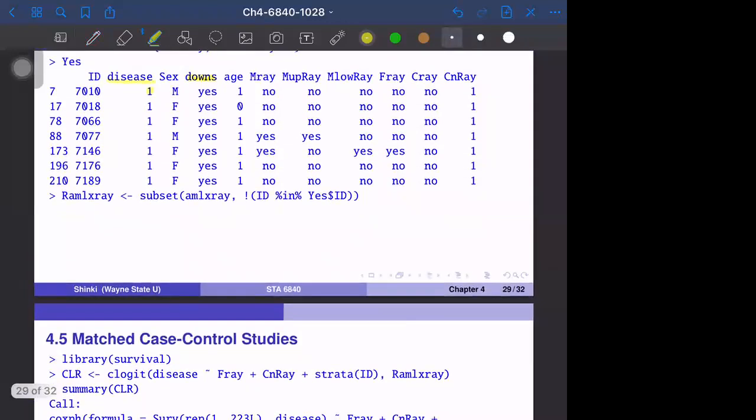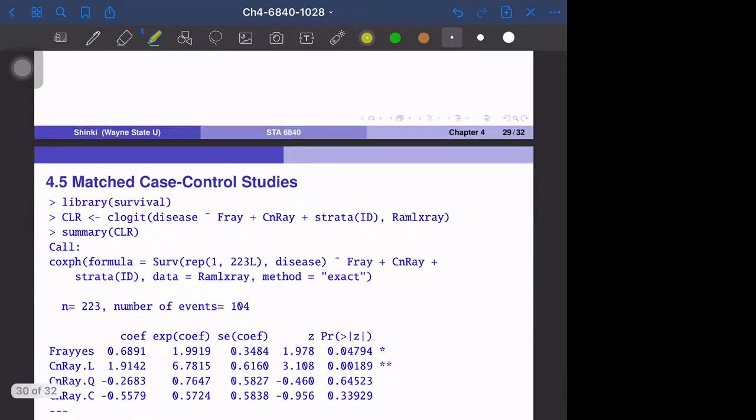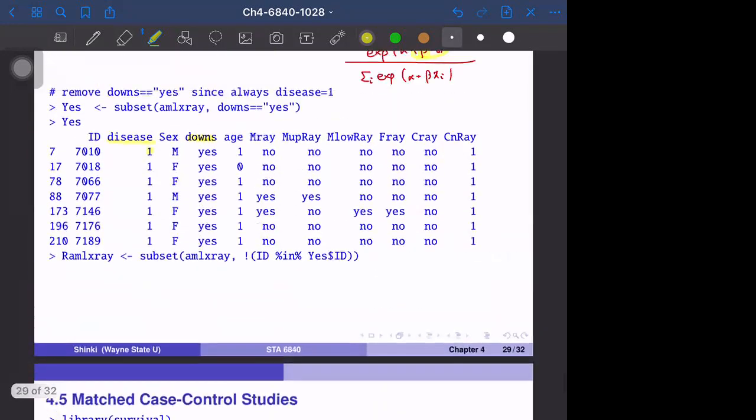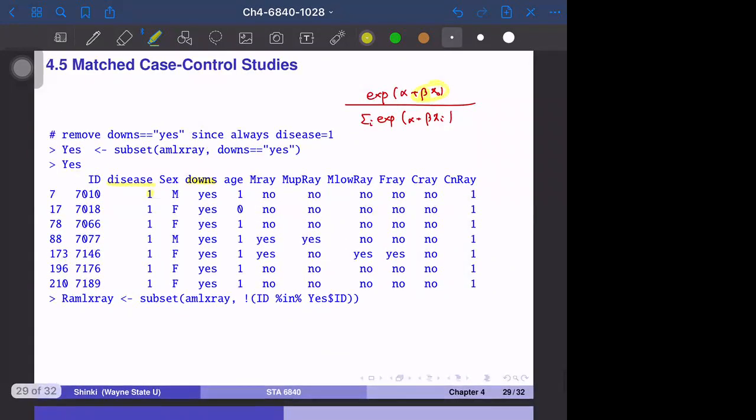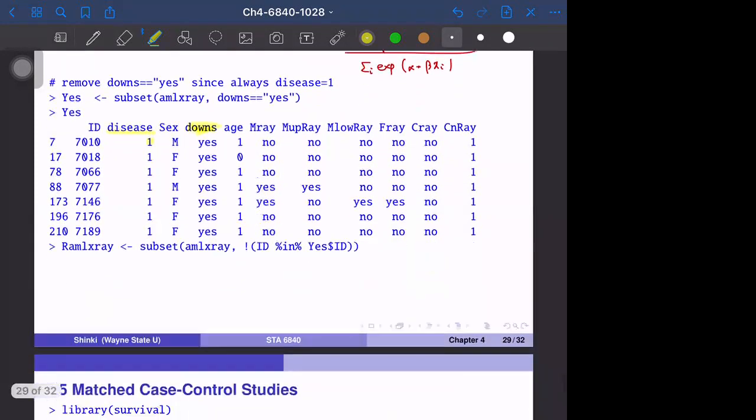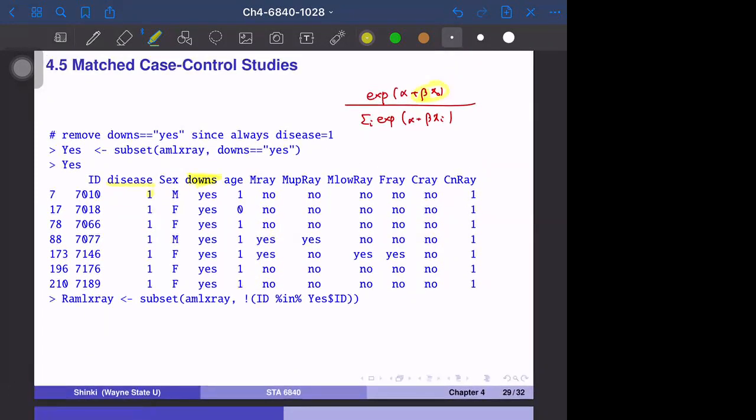If Down syndrome is present, disease status is always one. Otherwise, we develop a prediction model to see when the disease occurs. We exclude observations with Down syndrome equal to yes, and also exclude all observations within those subgroups.